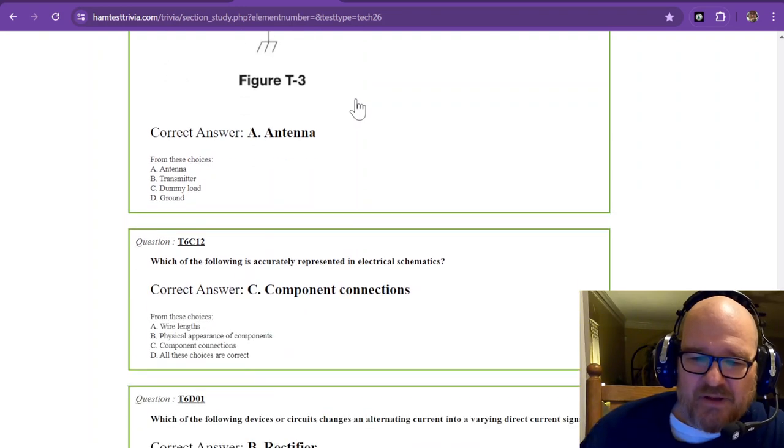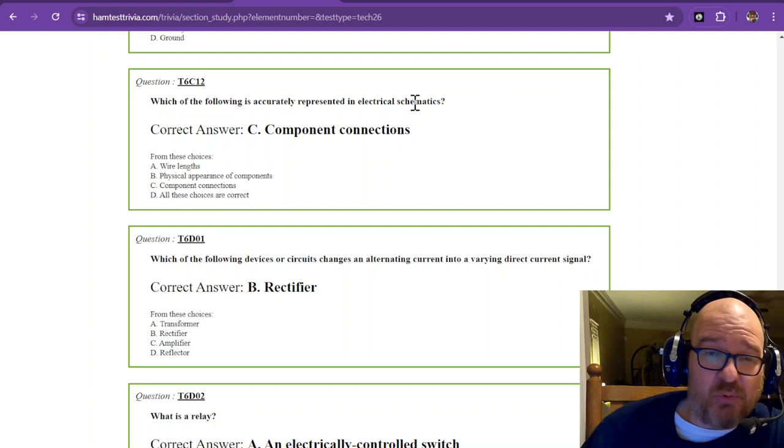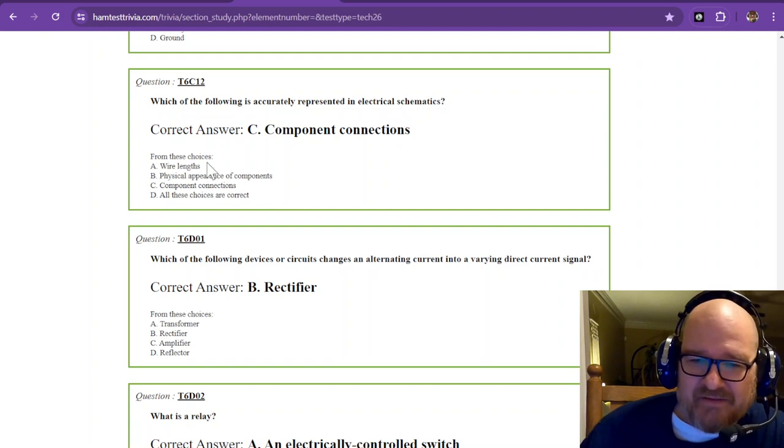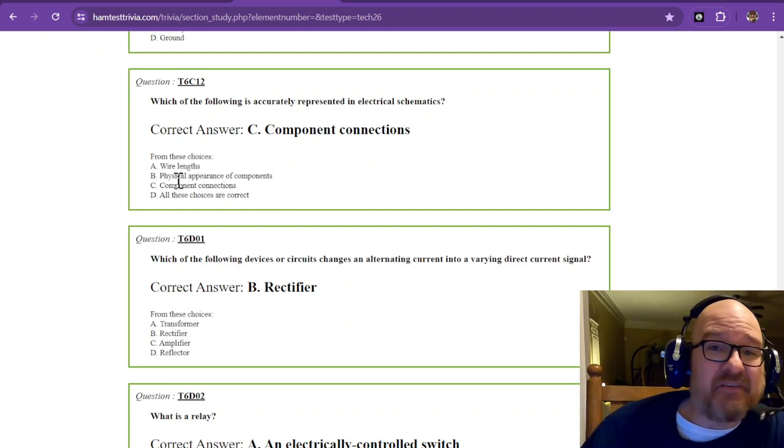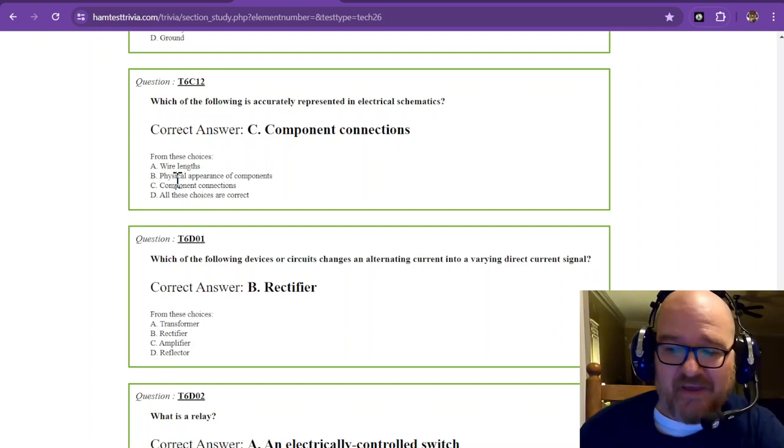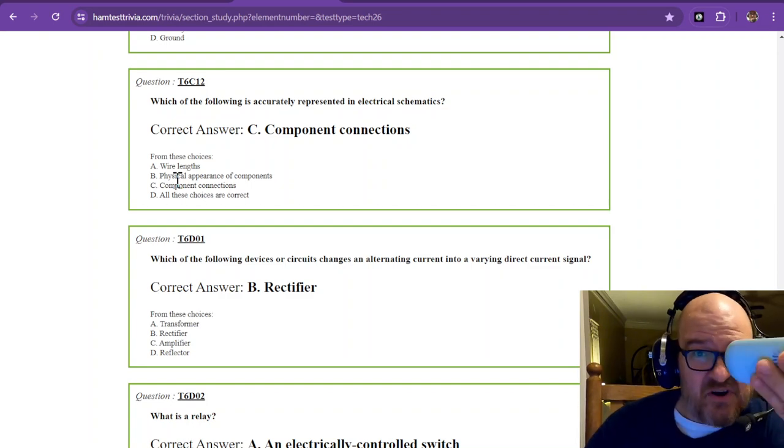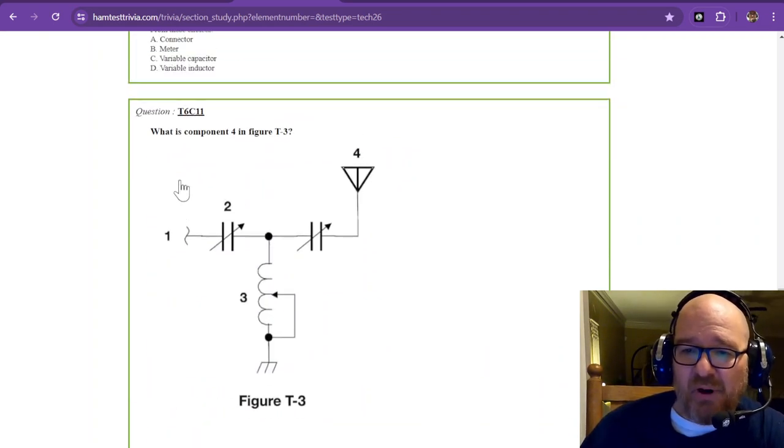And we're getting down to the last question. Which of the following is accurately represented in electrical schematics? Well, I hope you figured that out on your own, because I sure haven't explained it up to this point except for once. But it is component connections. It's not wire lengths. It's not the appearance of the components, because we said earlier your component might look like this. It might look like a mouse. It might look like some tape. So it could look like a battery. This is a battery. But do you want to draw that? Heck no. Okay, so component connections.